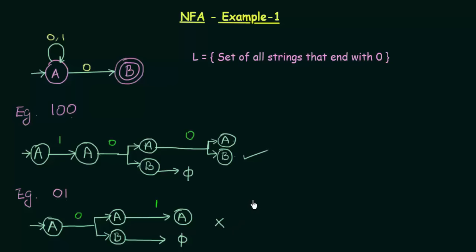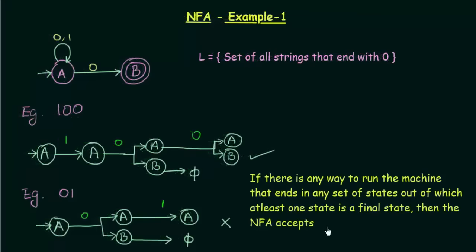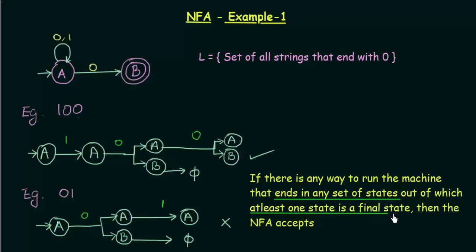Now, how can we formally write down when a string will be accepted? We can say that if there is any way to run the machine that ends in any set of states out of which at least one state is a final state, then the NFA accepts. In the first example we ended in states A and B, and B was a final state, so the string was accepted. In the second example we ended in A and Phi, where none were an accepting state, so the NFA rejected.